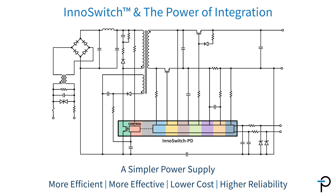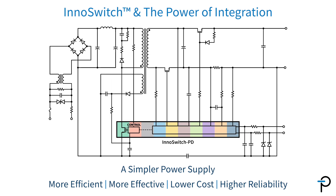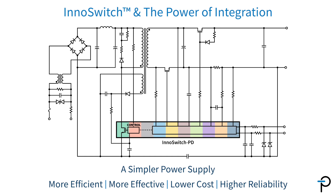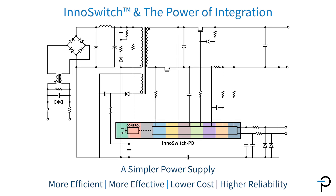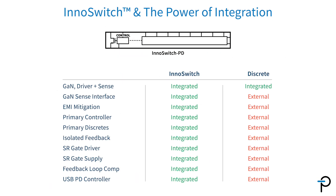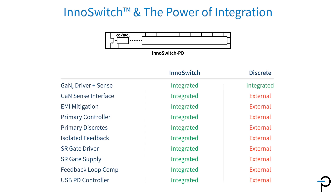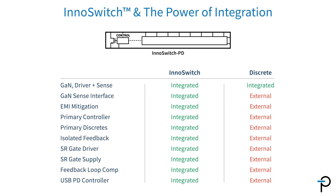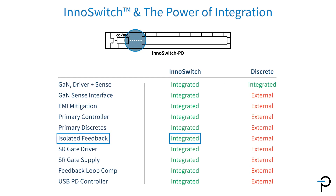In order to generate a more efficient, more effective, lower cost, and higher reliability product, all you need to do is switch to an InnoSwitch PD. The InnoSwitch device incorporates the sense, the EMI, the primary controller, a vast number of discrete components, and the isolated feedback.